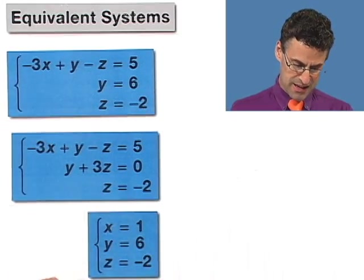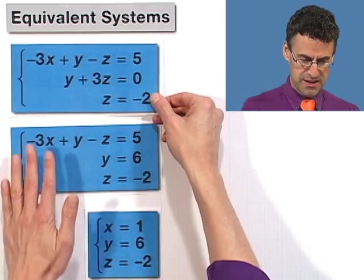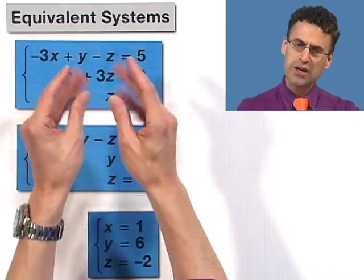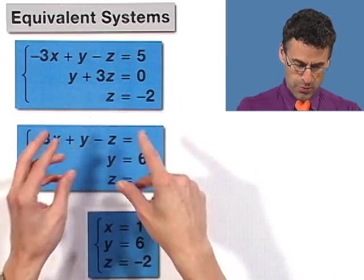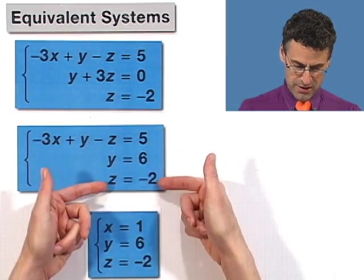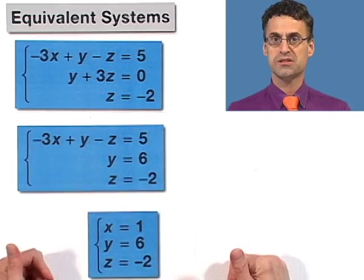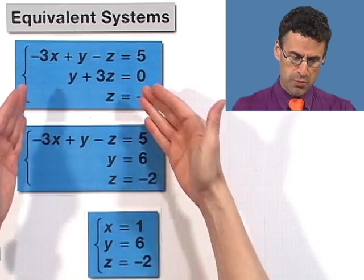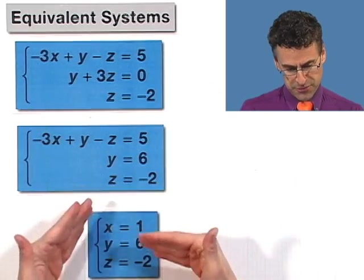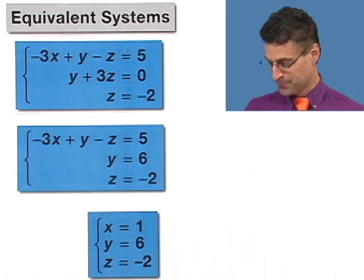So the idea is you start with something complicated, say something like this, and we kind of work it. And by working it, we get into something that's a little bit easier. Maybe we can read off two of the solutions and then we can use back substitution to figure out all the solutions. That's the strategy. So each one of these things, while technically they're different systems, they're equivalent systems. And that's the key thing. So for example, the way we go about this is by, to formalize this a little bit, using certain operations.